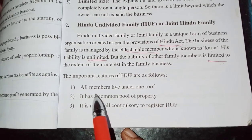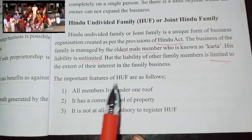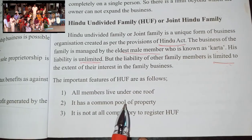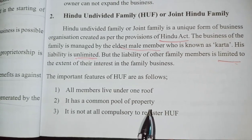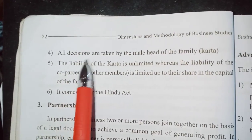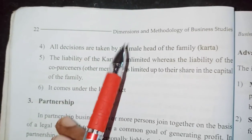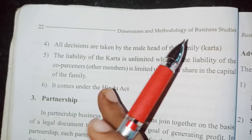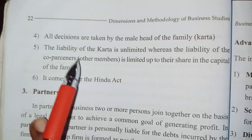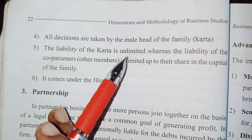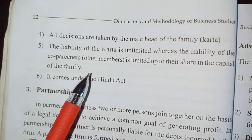Features of HUF: All members live under one roof. It has a common pool of property. It is not compulsory to register HUF. All decisions are taken by the male head of the family — the Karta. The Karta's liability is unlimited, while co-partners have limited liability. HUF comes under the Hindu Act.